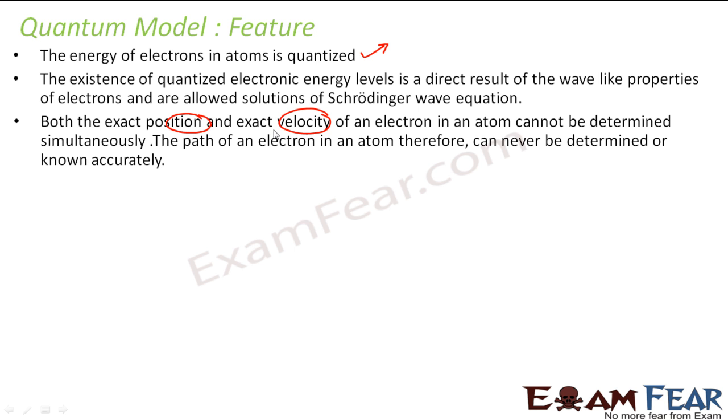Both the exact position and exact velocity of electron cannot be determined. That's what the quantum model says. And that's why the exact path of electron in an atom can never be determined accurately. And that's why we don't talk about the fixed orbits.